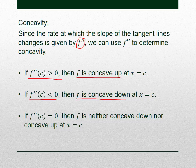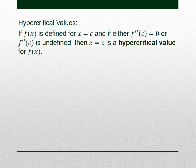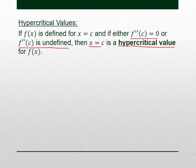If the second derivative is zero, it's neither concave up nor concave down. That's what we call a hypercritical value. Just like for the first derivative we had critical values, for the second derivative we have hypercritical values. When the second derivative is zero or undefined, that x value is a hypercritical value for our function f.